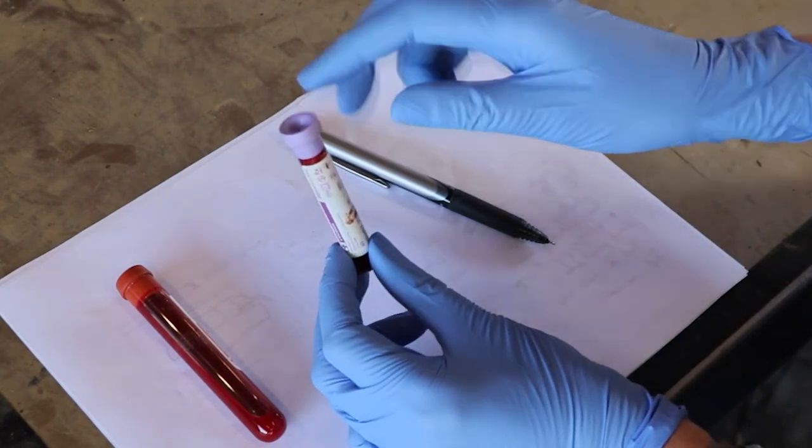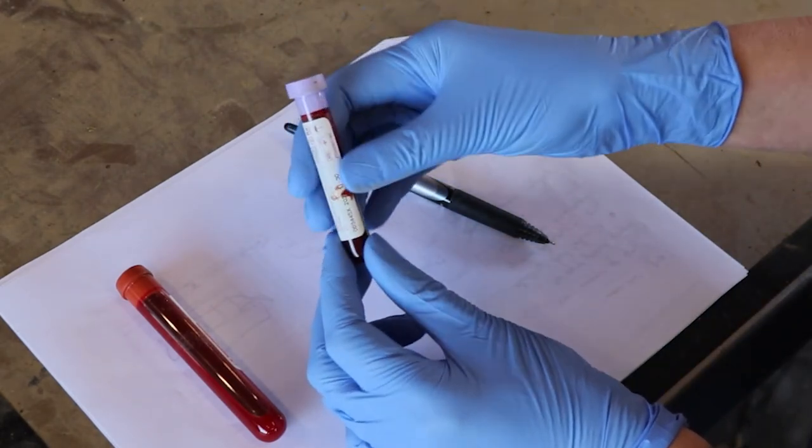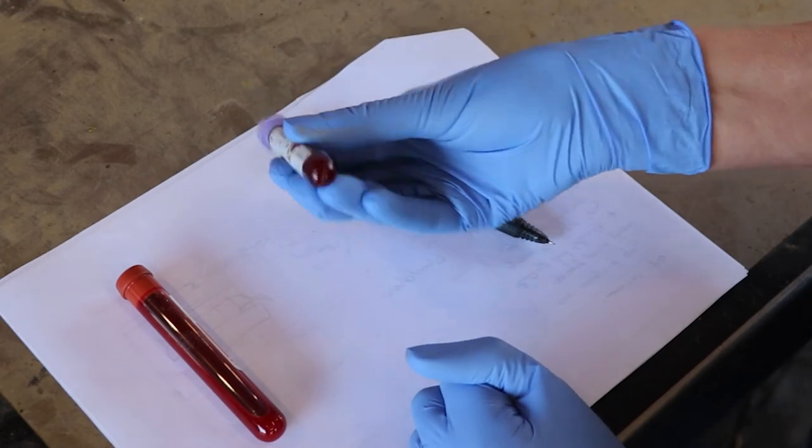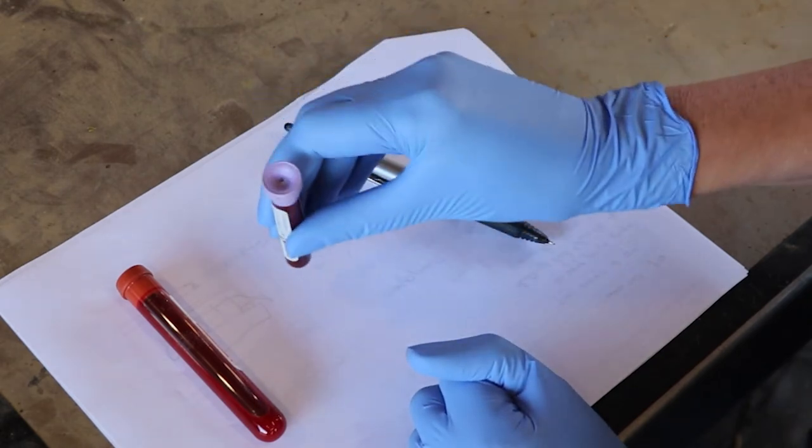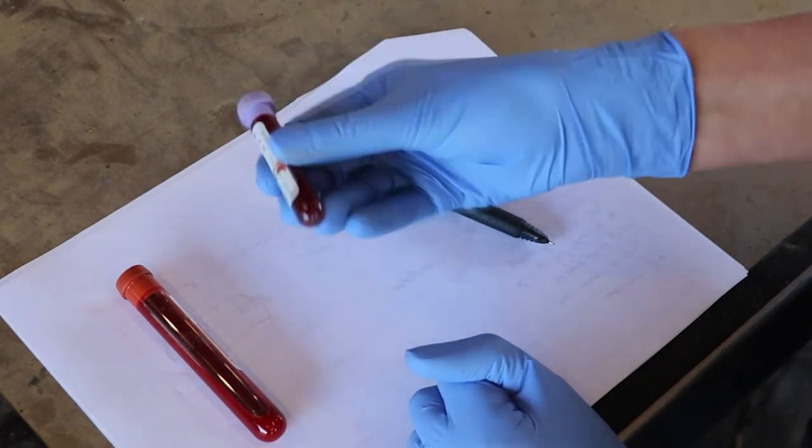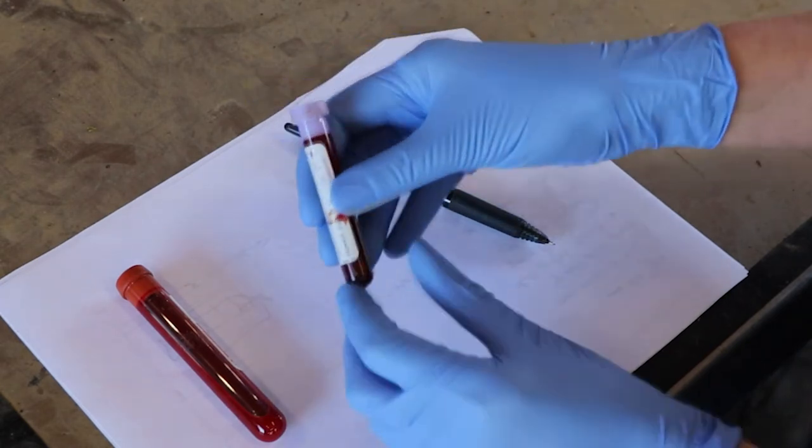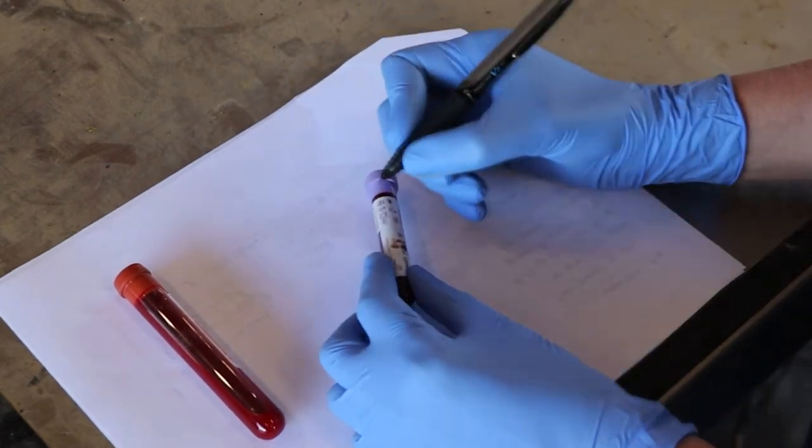If the tube contains an anticoagulant, basically any color other than red, you need to distribute the anticoagulant by gently rocking the tube several times. If you forget this step, the blood may clot and may not be usable for the intended purpose.